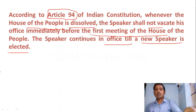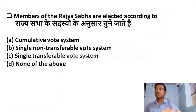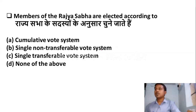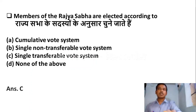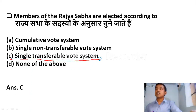The next question: members of Rajya Sabha are elected according to — Option A: Cumulative vote system. Option B: Single non-transferable vote system. Option C: Single transferable vote system. Option D: None of the above. Members of Rajya Sabha are elected according to the single transferable vote system.